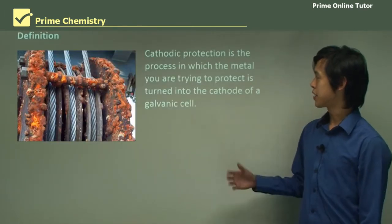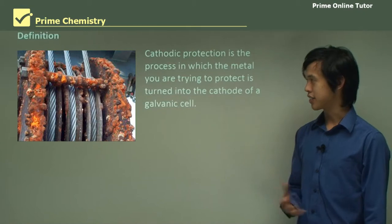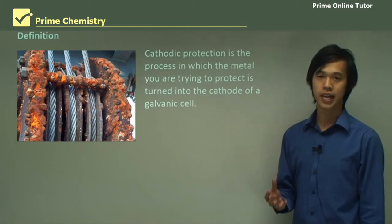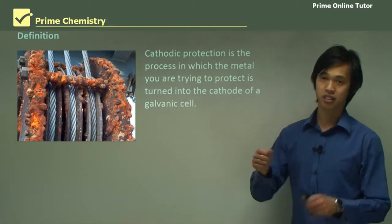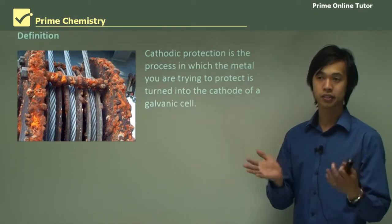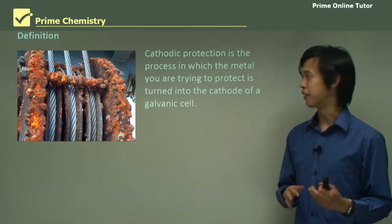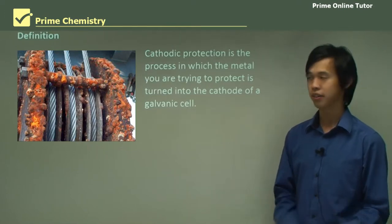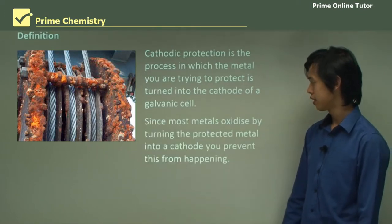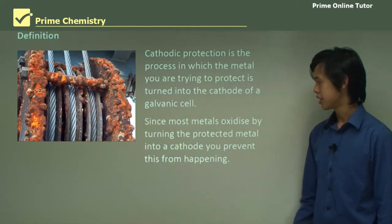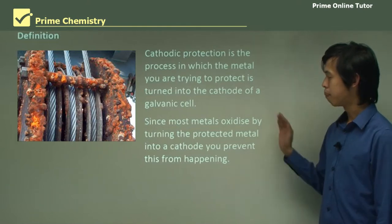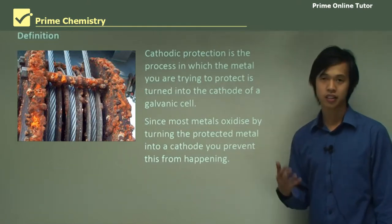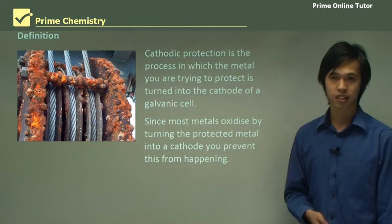Cathodic protection is essentially a process in which you make the metal that you want to protect — so let's say the hull of a ship — you make that metal the cathode of a galvanic cell. Since most metals oxidize, by turning the protected metal into a cathode, you prevent the oxidation process from happening.